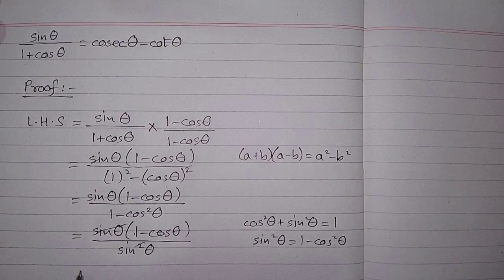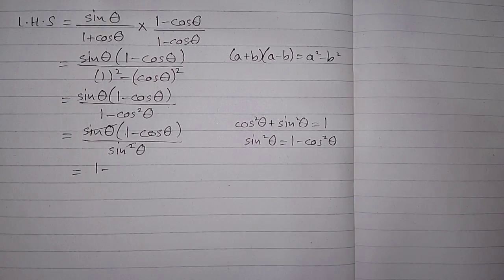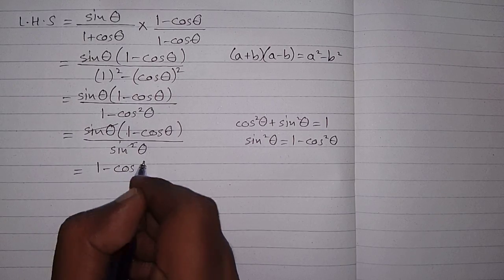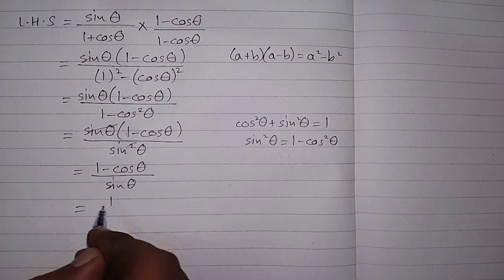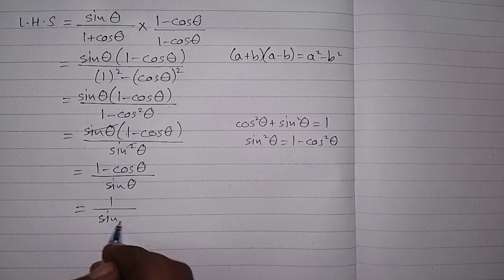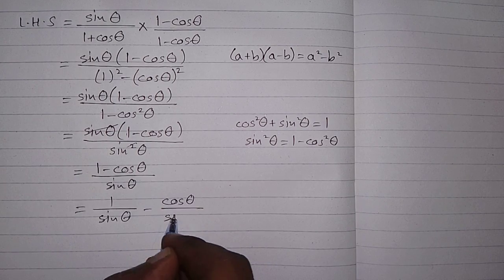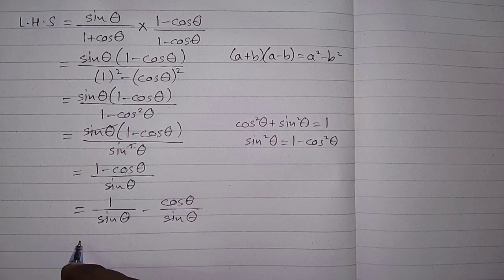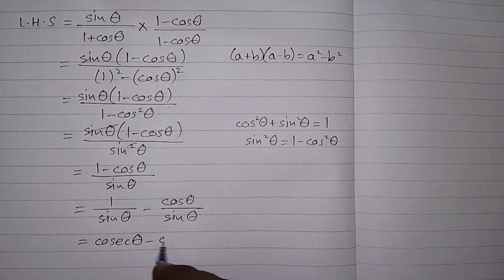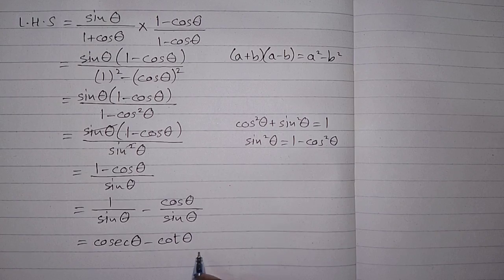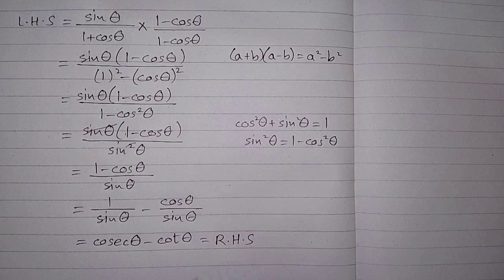Now we can cancel sin theta from the numerator and denominator, giving us 1 minus cos theta upon sin theta. We then break this into two fractions: 1 upon sin theta minus cos theta upon sin theta. Now 1 upon sin theta is cosec theta, and cos theta upon sin theta is cot theta. So this equals the right hand side of the identity.